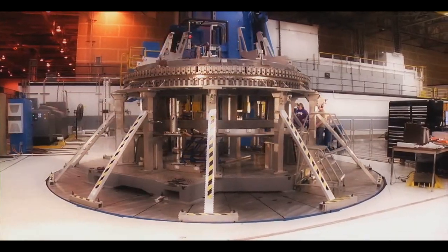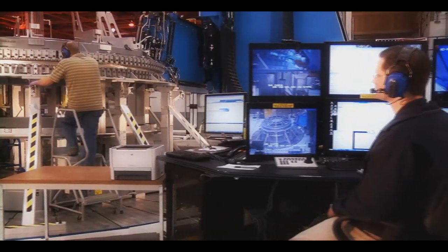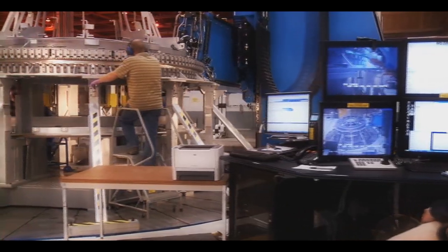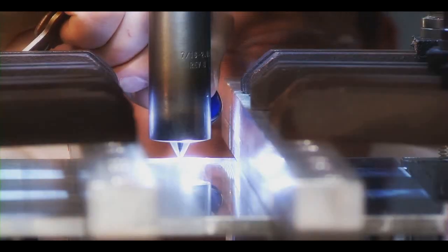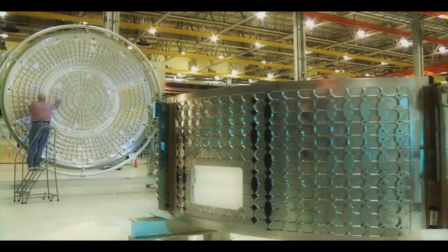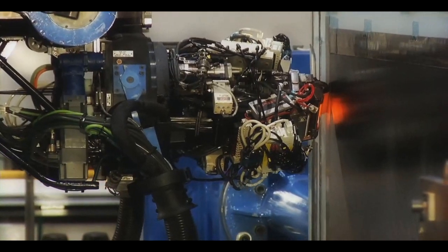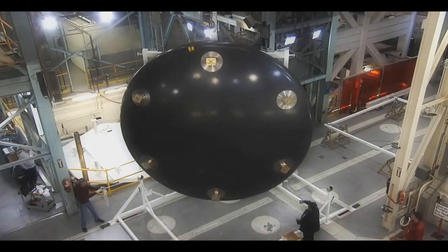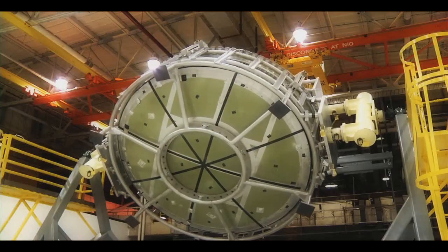Another significant milestone is completion of the first Orion ground test vehicle, which was built at NASA's Michoud Assembly Facility in New Orleans, Louisiana, and shipped to Lockheed Martin's Denver facilities to be integrated with thermal protection systems prior to testing.